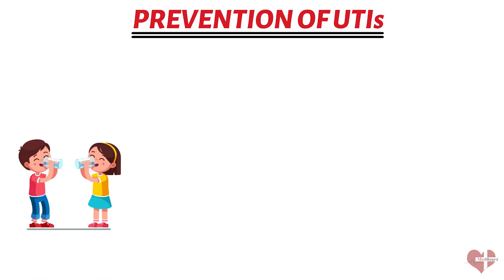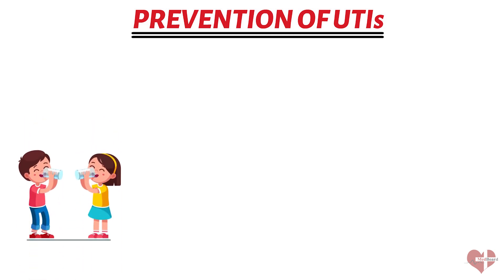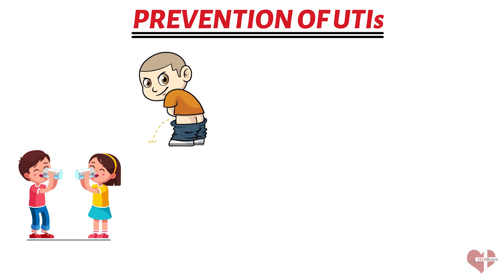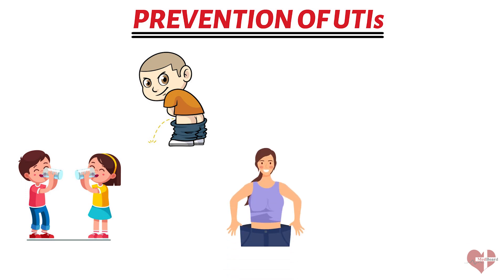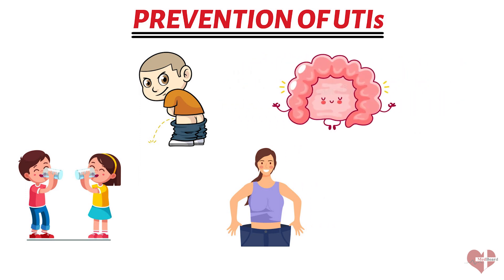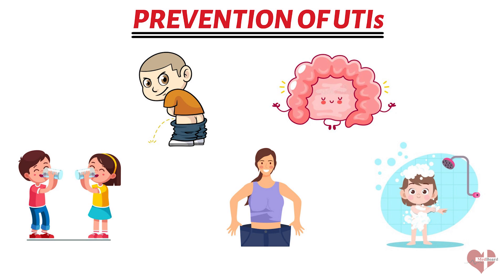There are steps you can take to help prevent future infections. These include drinking plenty of fluids, particularly water, to help flush out bacteria and prevent dehydration; urinating before and after sex to help flush out bacteria; wearing loose-fitting clothing and cotton underwear to promote airflow and prevent bacterial growth; taking probiotics to help promote healthy bacteria in the gut and urinary tract; and practicing good hygiene habits such as washing your hands regularly and keeping your genital area clean and dry.